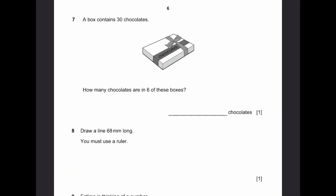Question 7. A box contains 30 chocolates. How many chocolates are there in 6 boxes? 30 multiplied by 6 is 180.